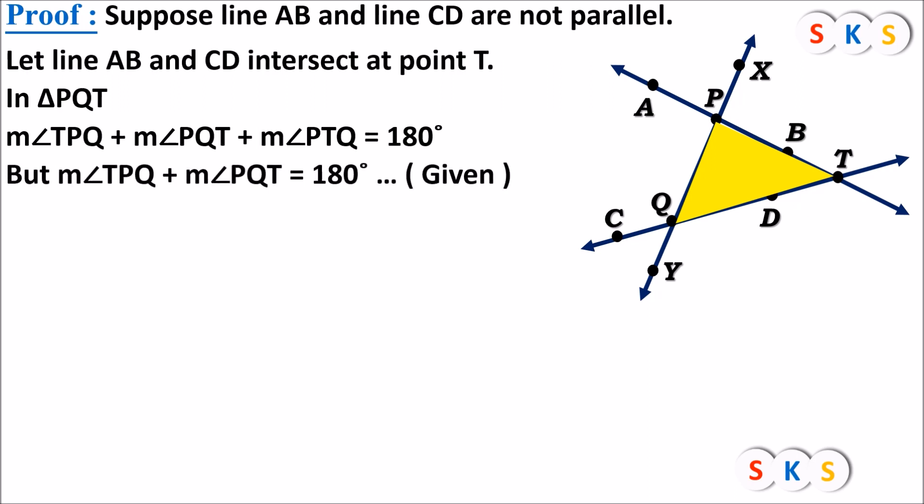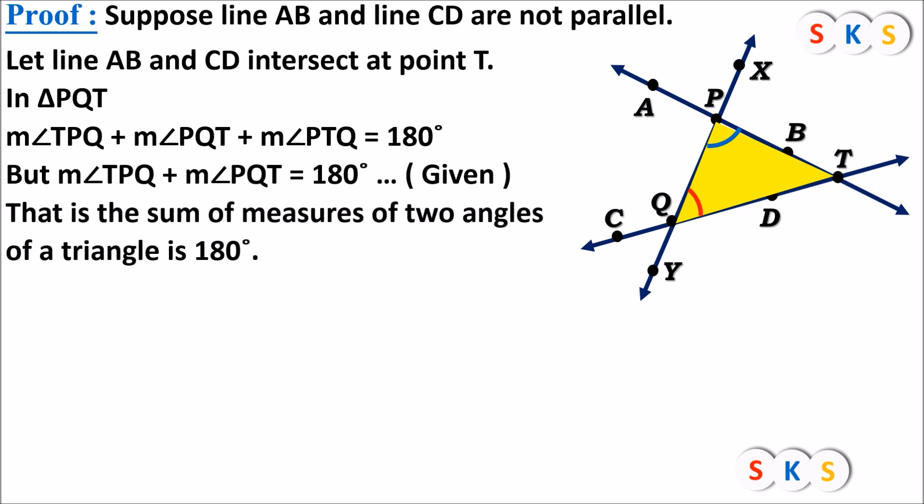But it is given that angle TPQ + angle PQT = 180°, because they are interior angles in the original figure and their sum is 180°. We know the sum of all three angles of the triangle is 180°. This means the measure of angle T must be zero degrees.